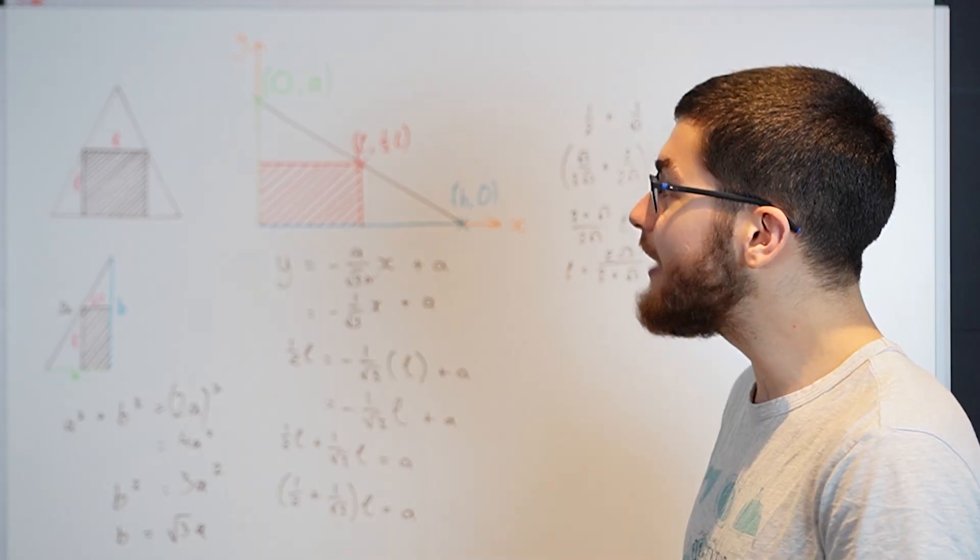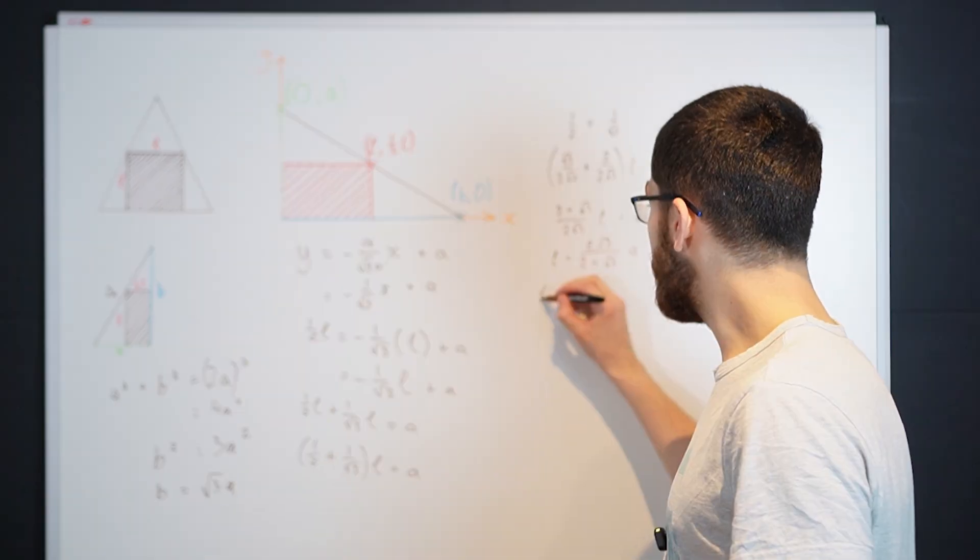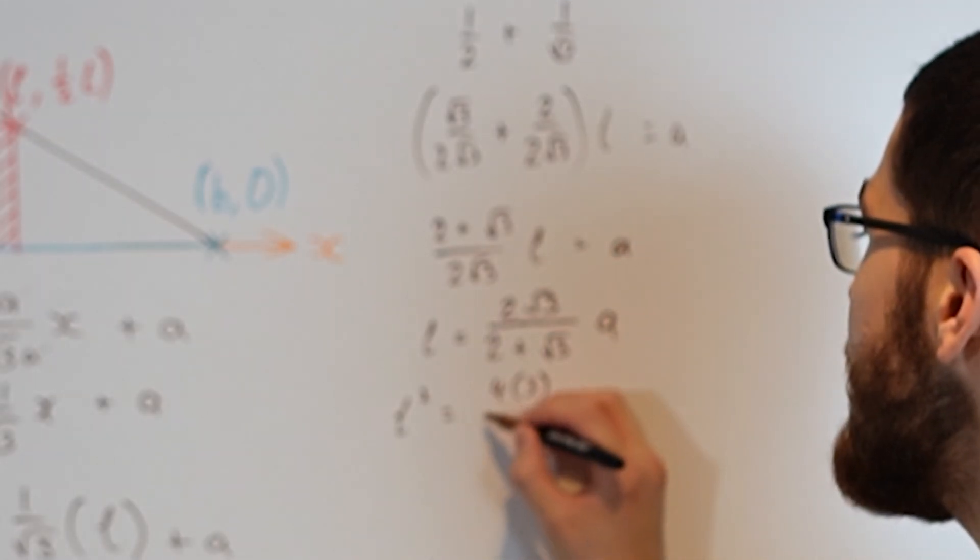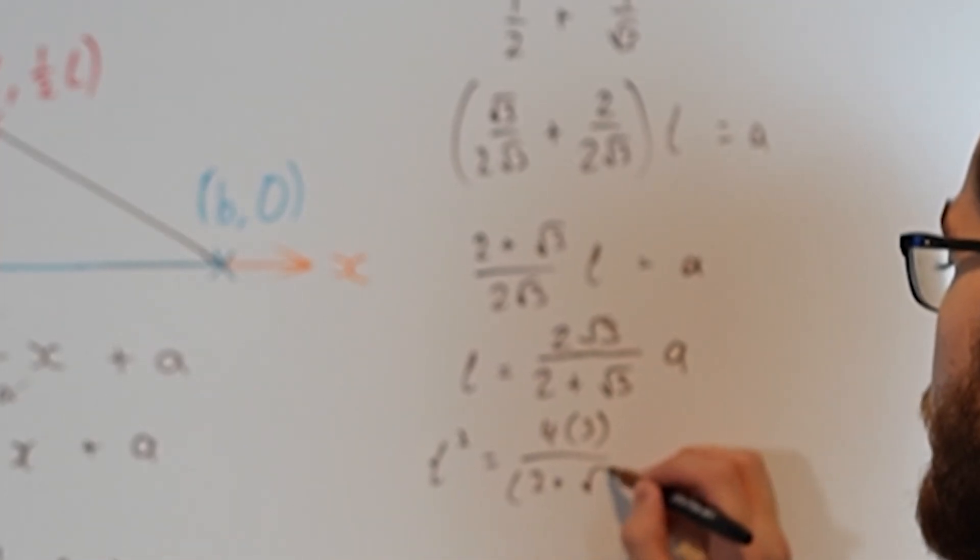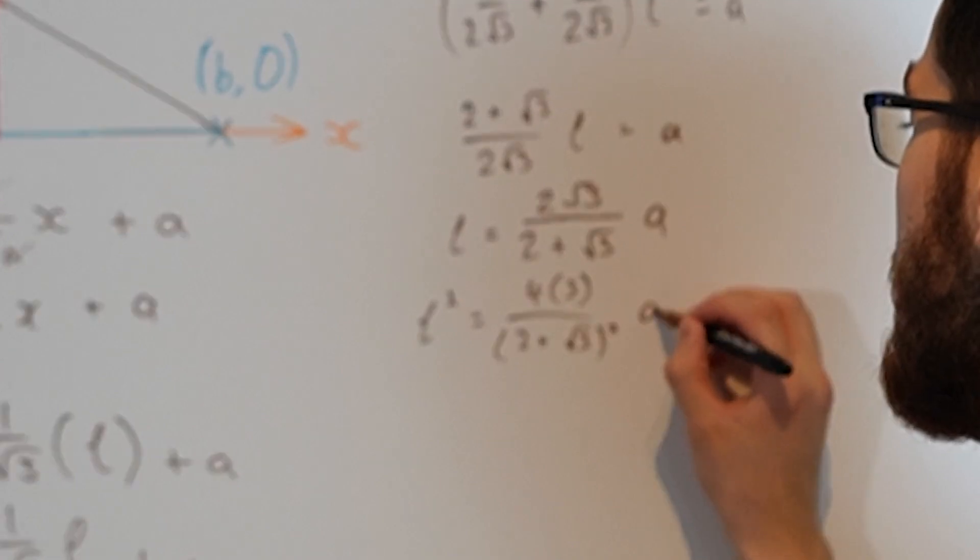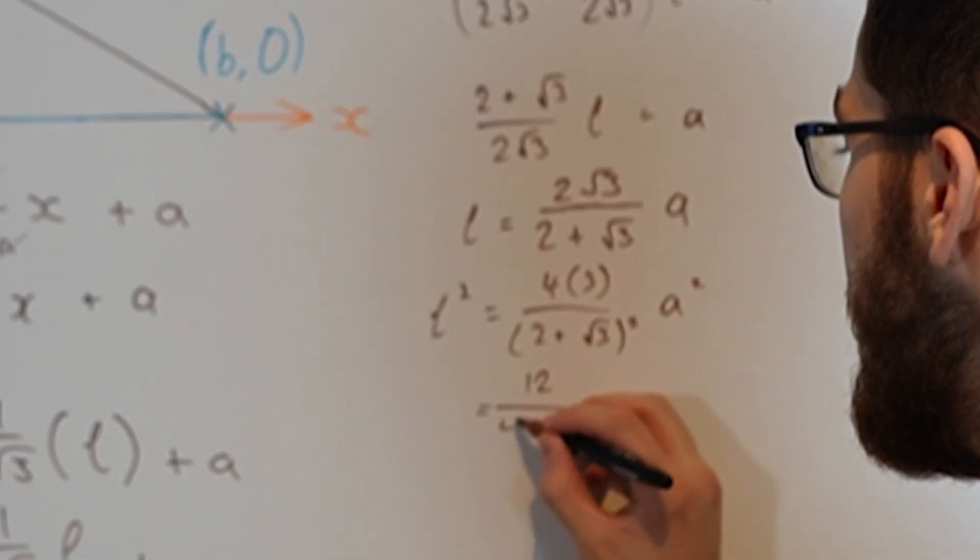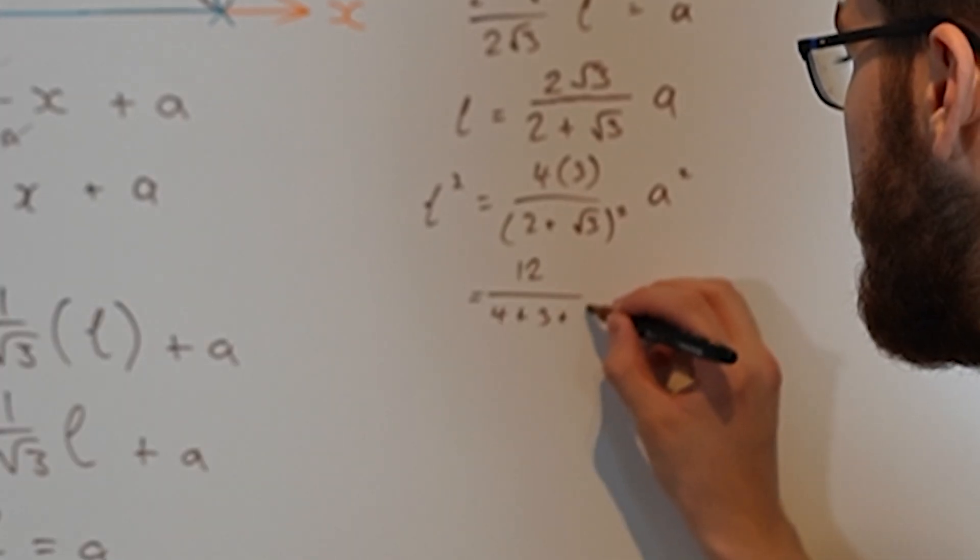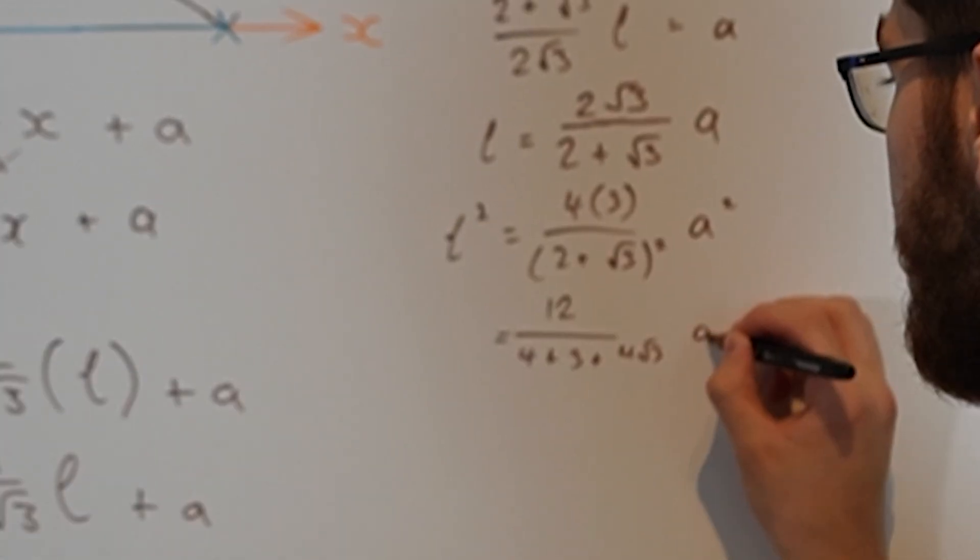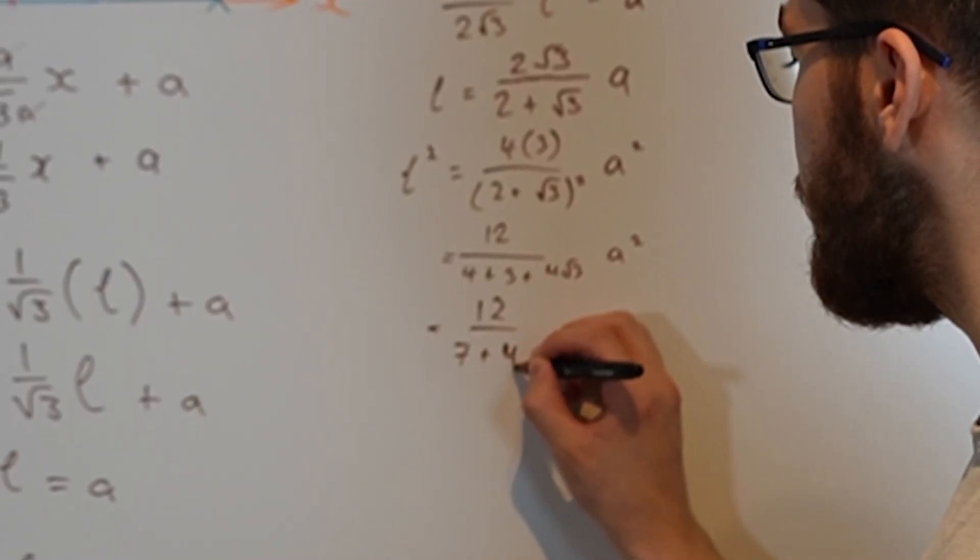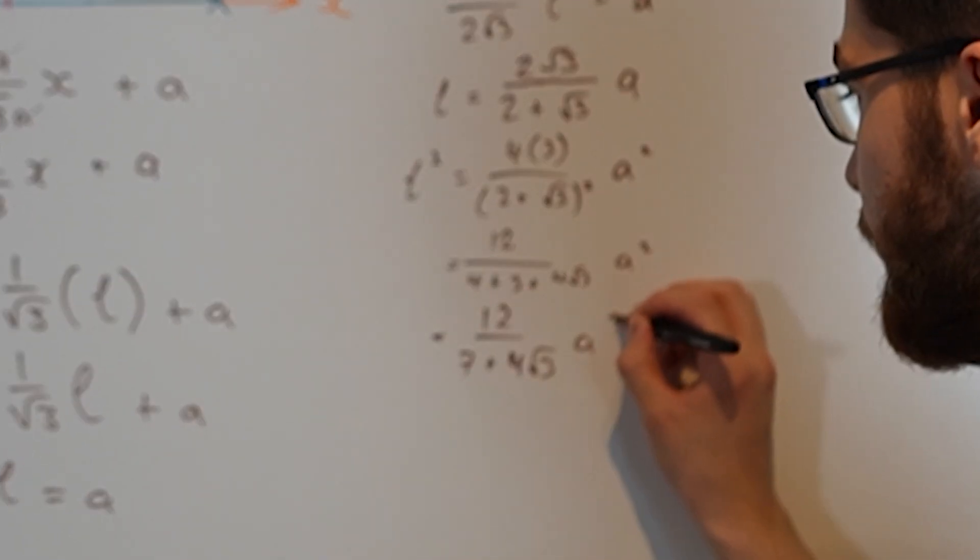The area of the square is literally just L times L, which is L squared. So L squared is equal to 4 times 3 over 2 plus root 3 all squared times A squared. And this changes to 12 over 7 plus 4 root 3 times A squared.